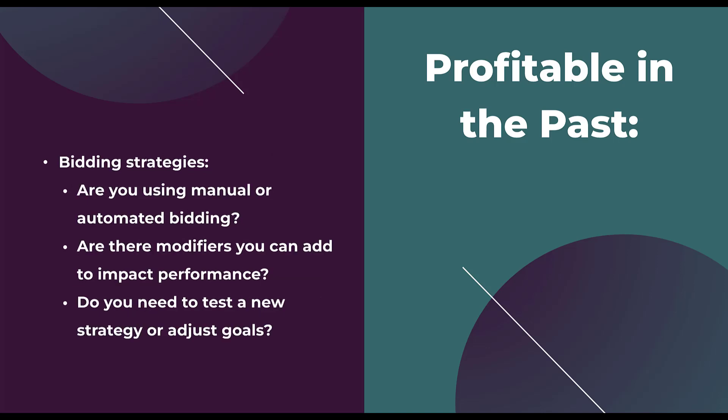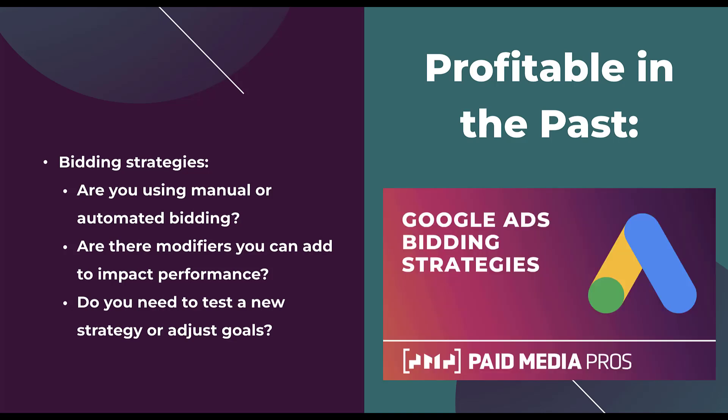Next is going to be bidding strategies. Are you using manual or automated bidding, and depending on which one you're using, would it make sense to use the other? If you're using manual bidding, are there bid modifiers you can make to impact performance? Maybe performance is poor over the weekend, or certain audiences aren't doing well, or your mobile experience isn't very good. Can you adjust some of those bid modifiers? Or if you're using automated bidding, do you have enough conversions coming through to support that strategy, and are your settings right for the amount of volume you're getting? We have a Google Ads bidding strategies video that covers all of these insights. But don't think that a keyword's performance is a result just of that keyword — there could be a lot of outside factors.